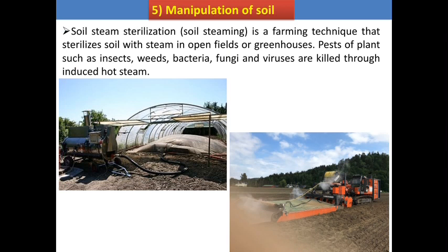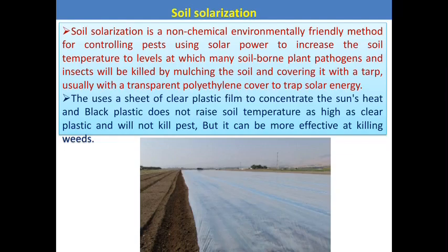Another technique is manipulation of soil. Here we can see the technique of soil steam sterilization or soil steaming — a farming technique that sterilizes the soil with steam in open fields or greenhouses. It helps reduce plant pests such as insects, bacteria, fungi, and viruses through induced hot steam. The next soil manipulation technique is soil solarization. In the summer months, with the help of transparent polythene sheets, we cover the field for about 15 to 20 days during the hot summer. This increases soil temperature and helps reduce different pest populations present in the field.